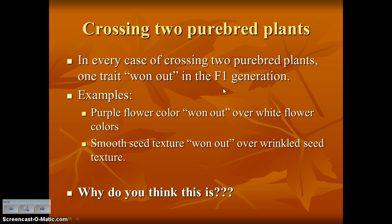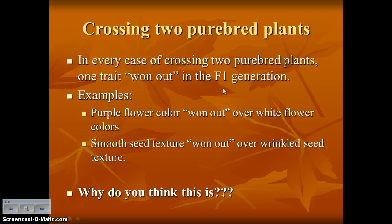Mendel realized there was a stronger trait that won out every time in the F1 generation — purple flower color won over white. When he crossed smooth seeds versus wrinkled seeds, smooth always appeared in the F1 generation. This is where we learn the terms dominant and recessive. The trait that appeared in the F1 generation — the stronger trait — he called the dominant trait. The trait that didn't appear — the weaker trait — he called the recessive trait.